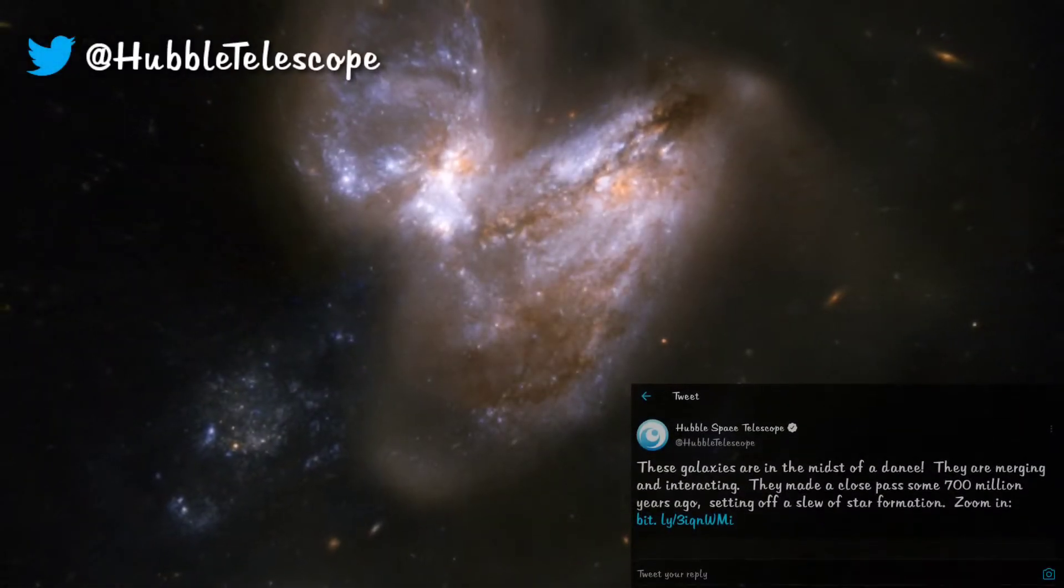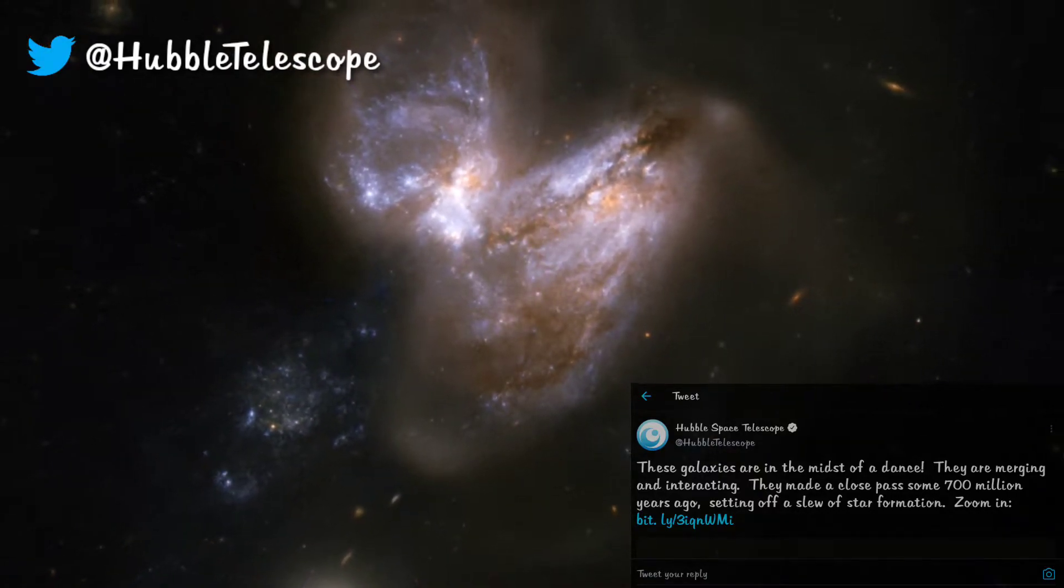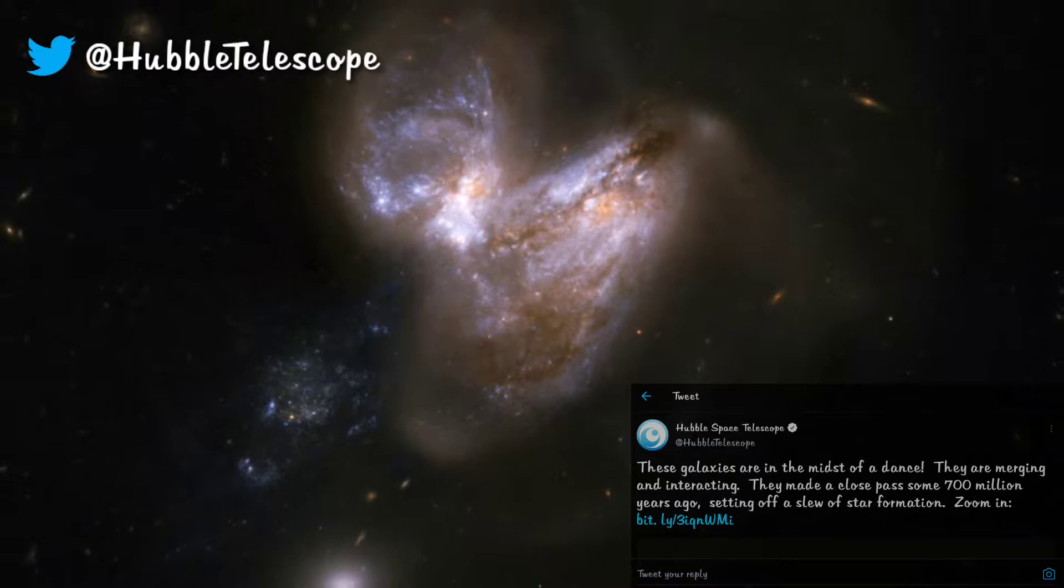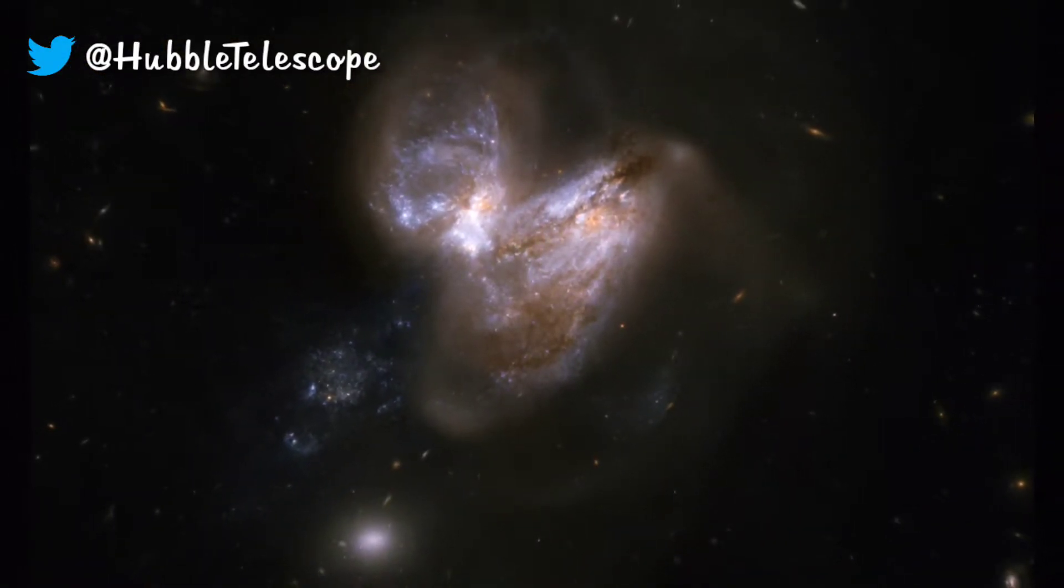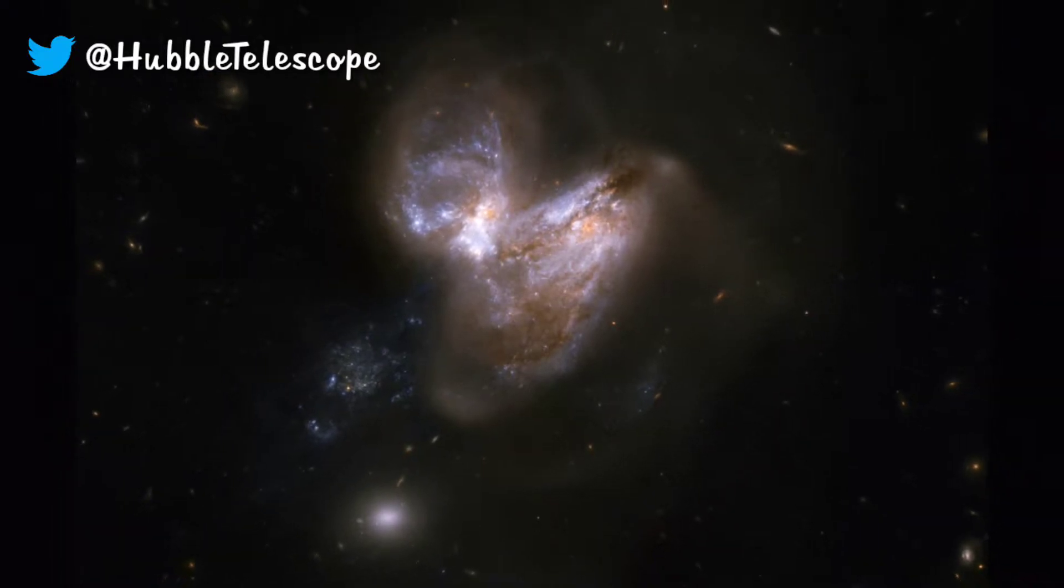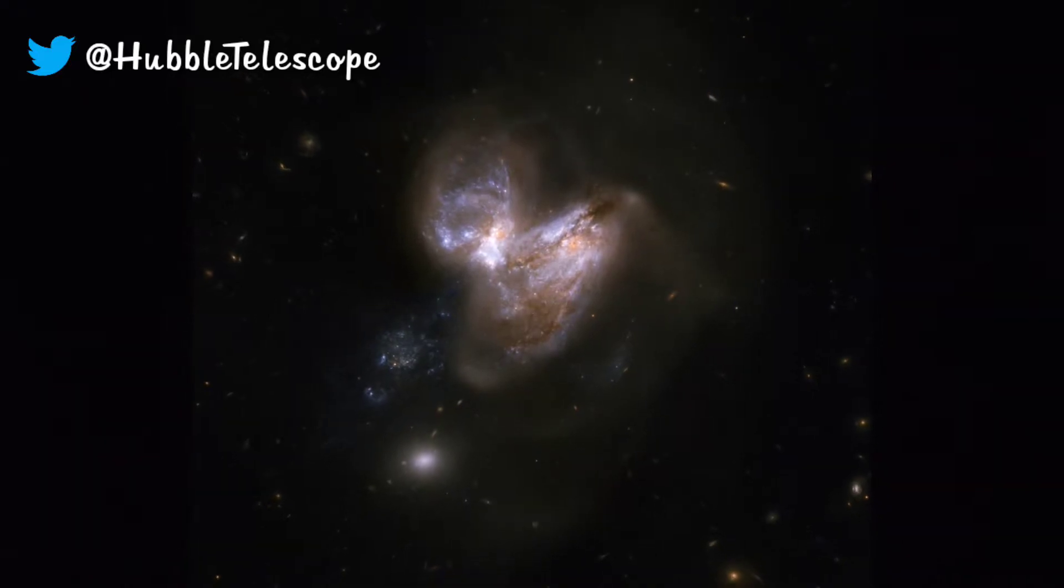This system known as ARP 299, or NGC 3690, is a pair of interacting galaxies that came close to each other some 700 million years ago. As a result of interaction, this system underwent a fierce star formation, resulting in at least six supernovae in under two decades. Find more about them from the link in the description.